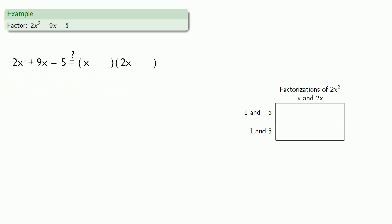So I'll try our first pair of factors, 1 and negative 5. Is this x plus 1 times 2x minus 5? Nope. Now, before we dismiss this as a possibility, notice that we can actually switch the places of our constant terms.